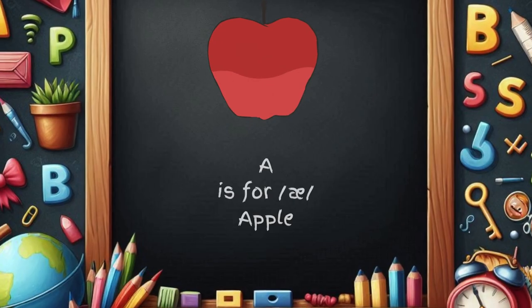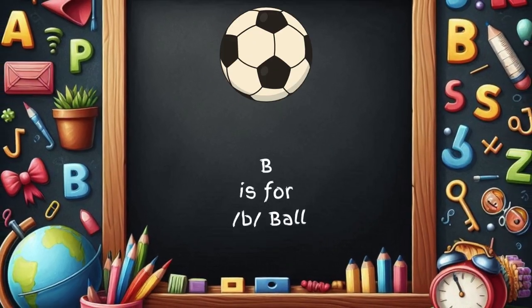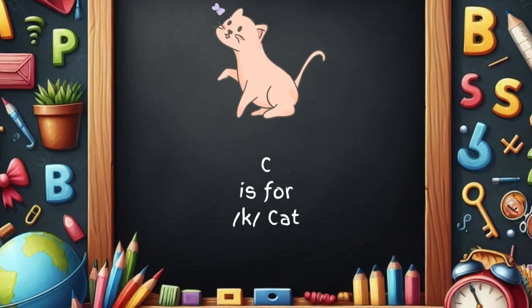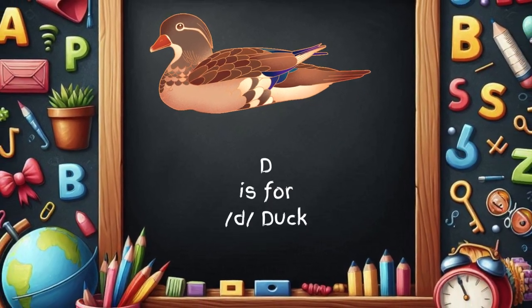A is for apple, a-a-apple. B is for ball, b-b-ball. C is for cat, c-c-cat. D is for duck, d-d-duck.